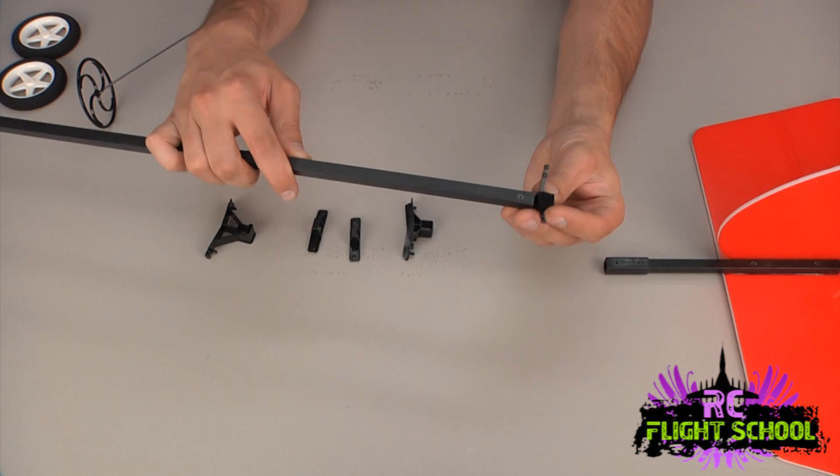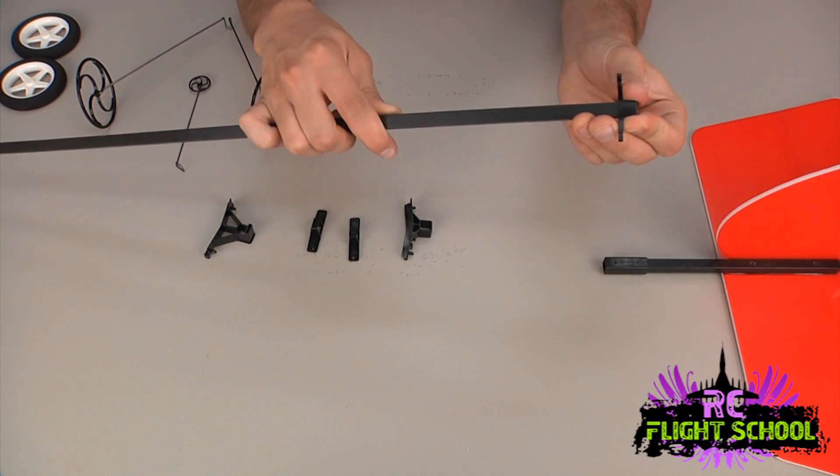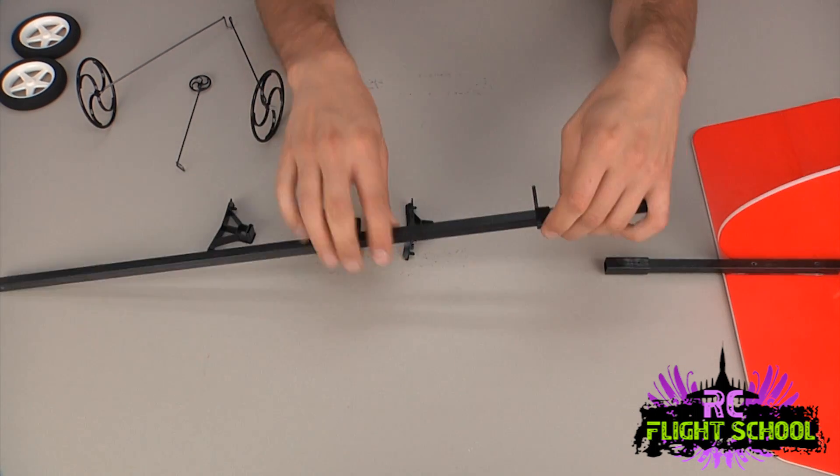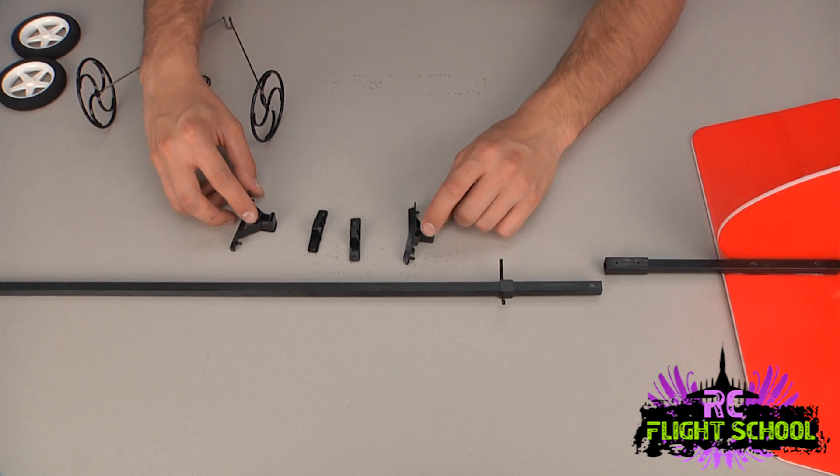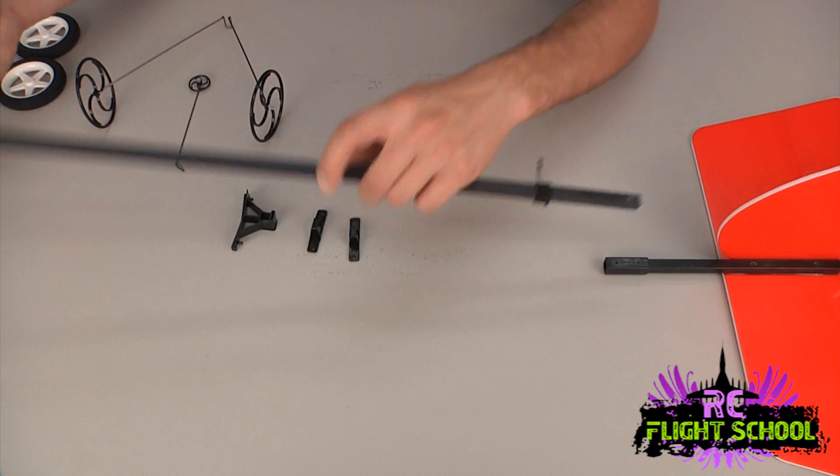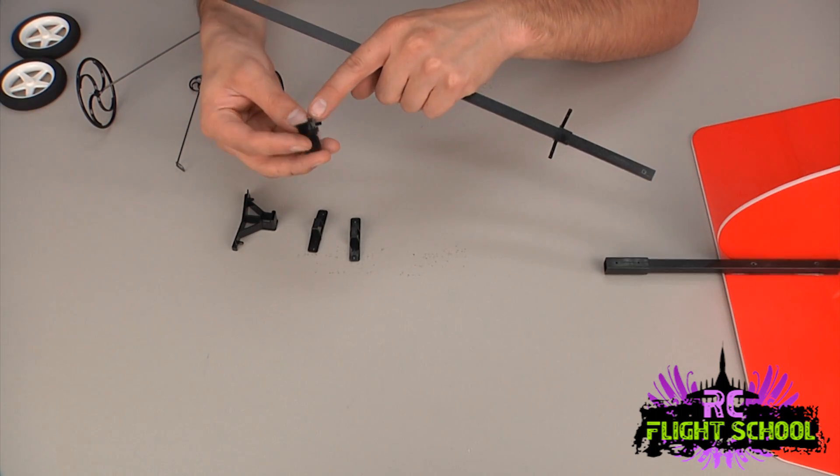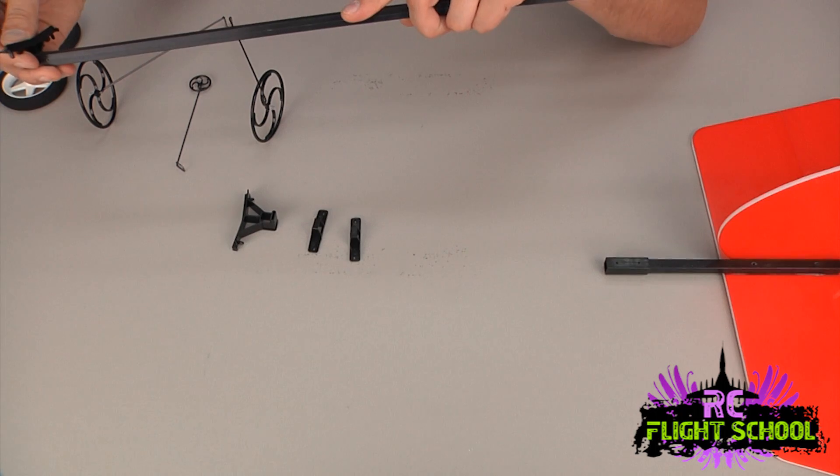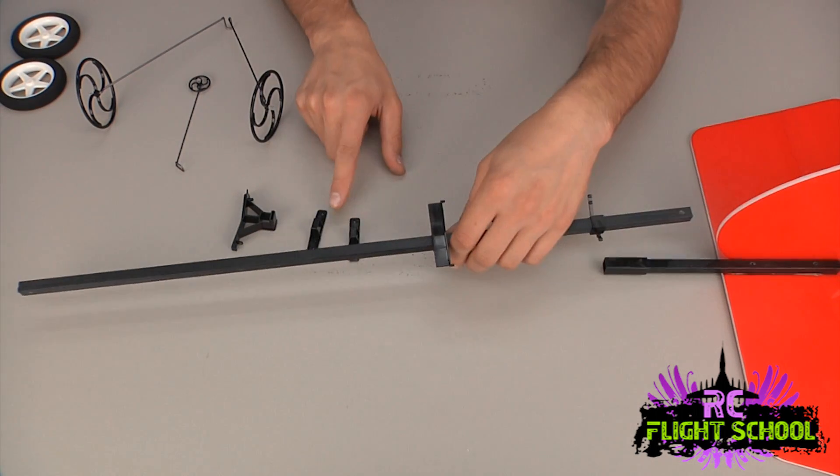So here's the order. This guy goes on the back. This is going to be what holds our push rods and the tail gear. Push that on. You can see we have a front and rear wing mount here. The rear one is a little shorter than the front one so keep that in mind. And they're only going to go on one way. You want to make sure that you got the lip of this guy on the back side. So push her all the way down.